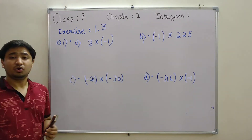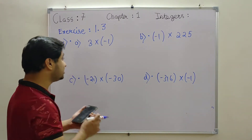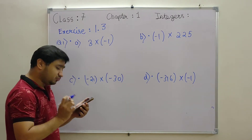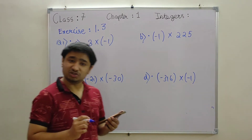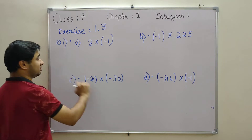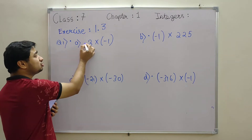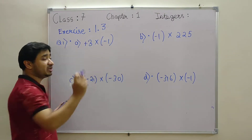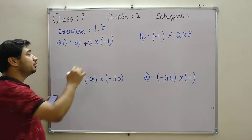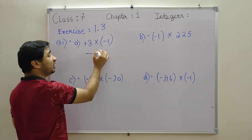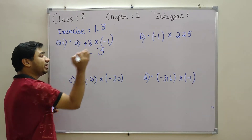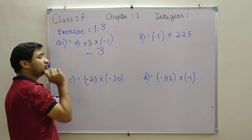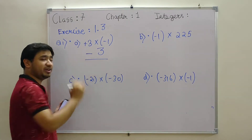Moving on to exercise 1.3, Question 1. There are four options. Note: if there is no sign in front of a number, it has a plus sign. So plus into minus gives minus — 1 into 3 is 3, but the answer is minus 3.